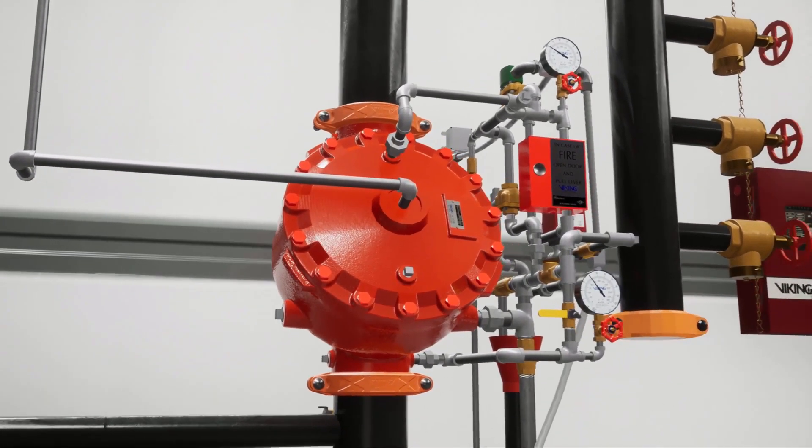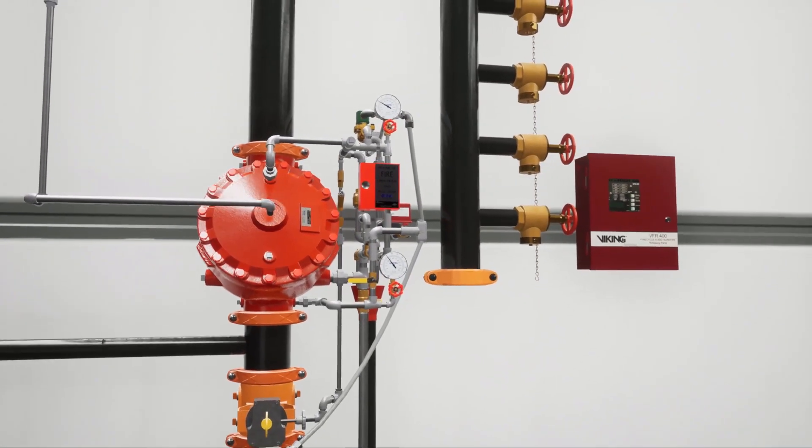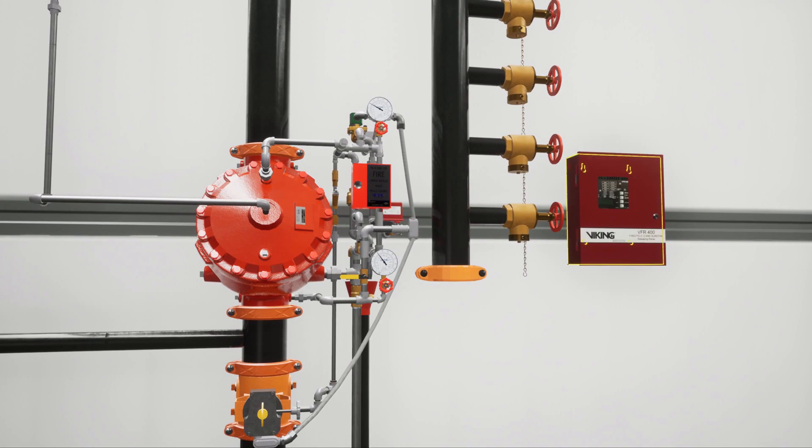In a scenario where a fire has started in the hangar and begins to grow, the electric detection device activates and sends a signal to the VFR 400 release control panel.